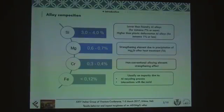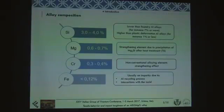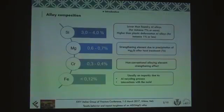First of all, I will show you the chemical composition of the alloy. As you can see, there is a silicon content between 3 and 4%, which is low compared with typical casting aluminum alloys. But on the other hand, it is also too high to consider this material a wrought alloy — an alloy for plastic deformation processes.